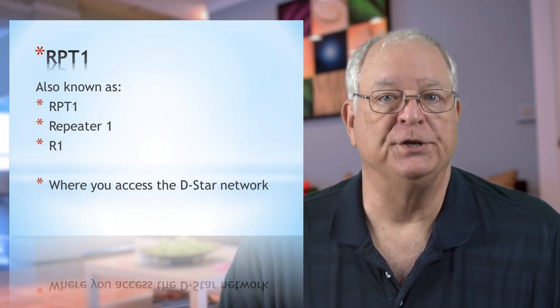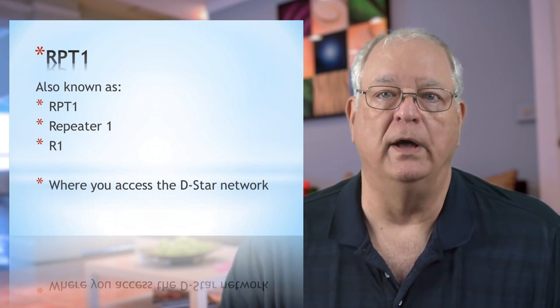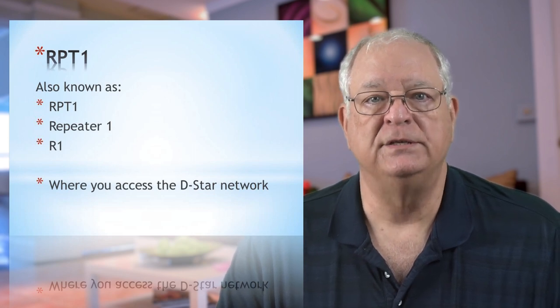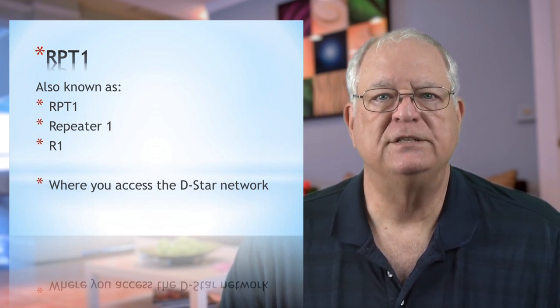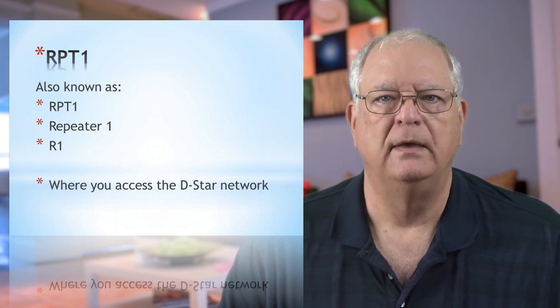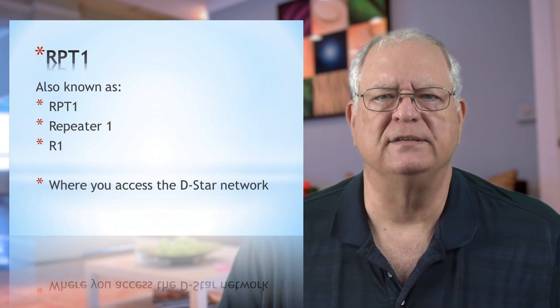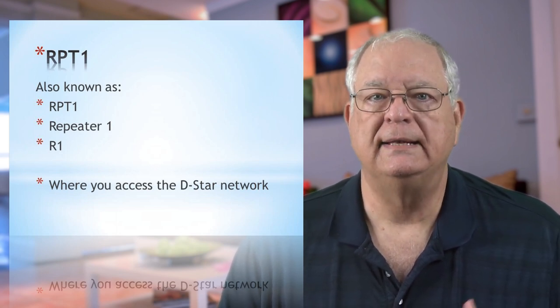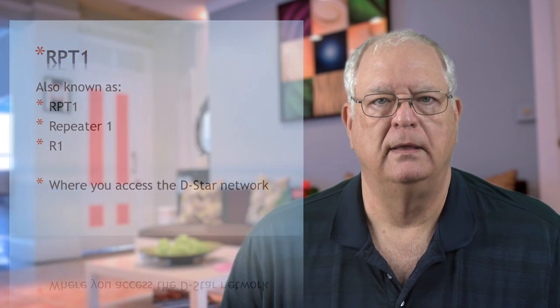The next element is called RPT1. You'll also see it referred to as REPEATER1 and R1. This data element is the repeater you are transmitting to — it's the first step for the signal from your radio to the DSTAR system, and it's how you want to access the DSTAR network. It can be a repeater or a hotspot. This element contains two important components: the repeater's callsign and the module you are using.